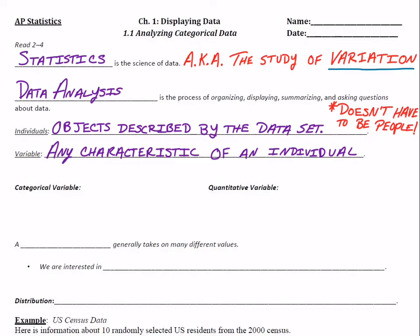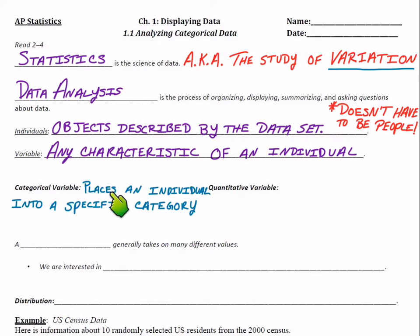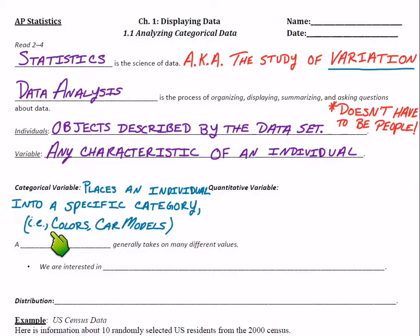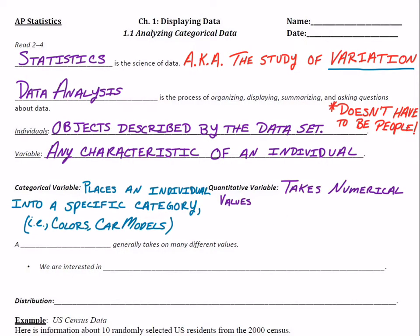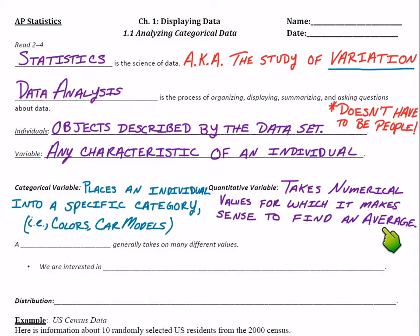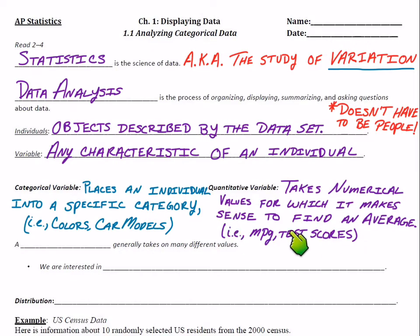The two big types of data can be sorted into either categorical variables or quantitative variables. Categorical variables place an individual into a specific category — things like colors or car models that aren't related to numbers. Quantitative variables take numerical values for which it makes sense to find an average, like miles per gallon or test scores.